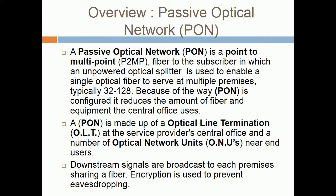Because of the way PAN is configured, it reduces the amount of fiber and equipment the central office uses. A PAN is made up of Optical Line Termination at the service provider's central office and a number of Optical Network Units used near end users.